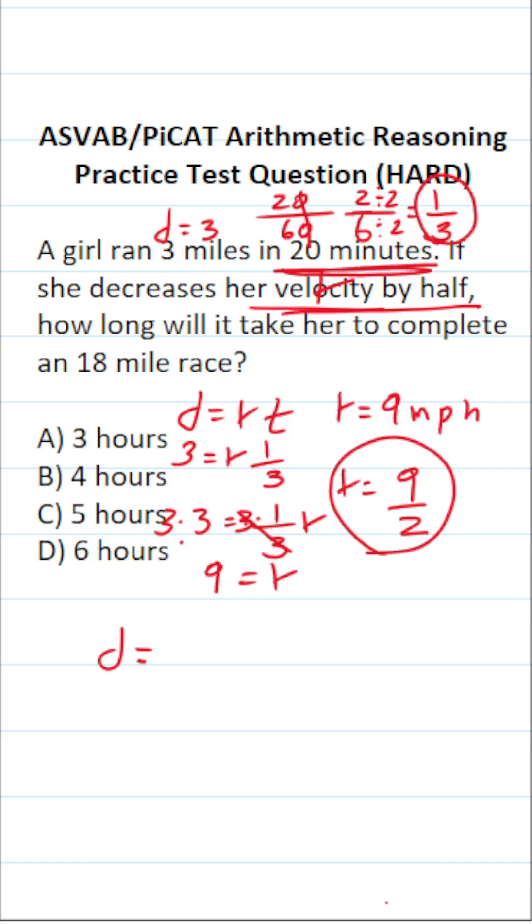And we're going to use another iteration of the distance formula to determine how long, which is in reference to time, it's going to take her to complete that race. Again, the race is 18 miles. We know her rate is 9 over 2 miles per hour. And we're going to be solving for t.